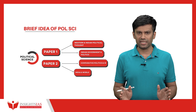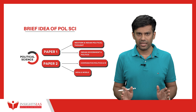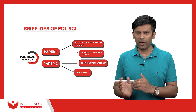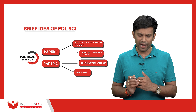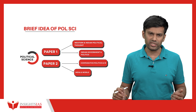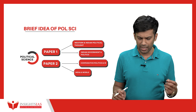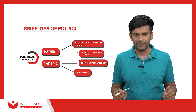Coming to political science, Paper 1 has two parts: Part A is Western and Indian Political Thought, and Part B is Indian Government and Politics. In Paper 2, Part A is Comparative Politics and International Relations, and Part B is India and the World.